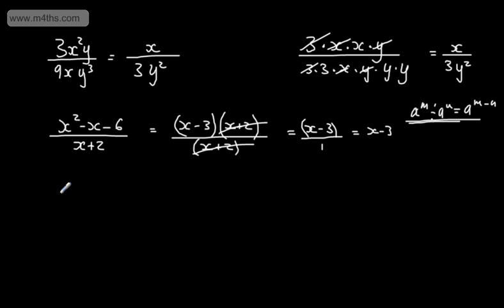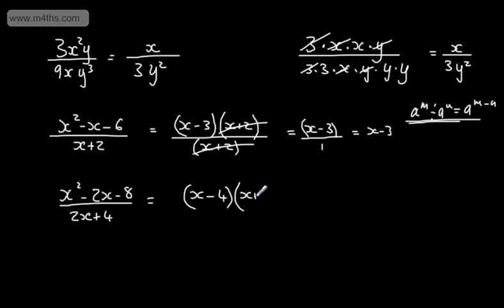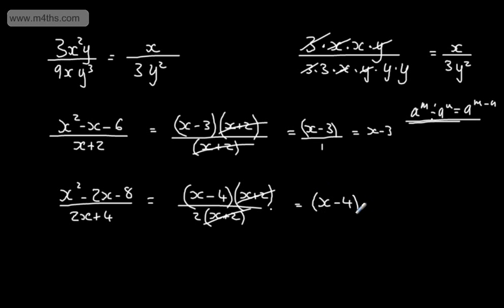Let's look at another one: x squared minus 2x minus 8, divided by 2x plus 4. We might be asked to simplify this fraction. The numerator factors to (x minus 4)(x plus 2). In the denominator, 2x plus 4 factors to 2 lots of (x plus 2). The x plus 2's cancel, leaving (x minus 4) divided by 2.